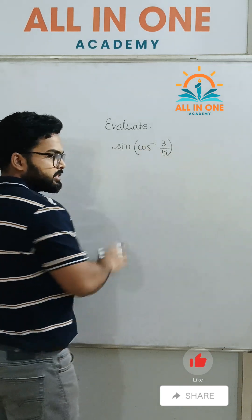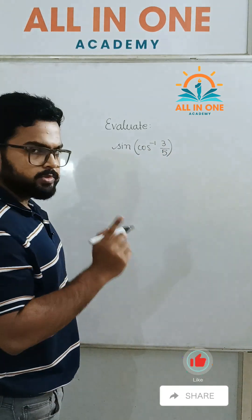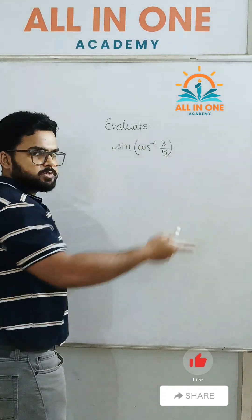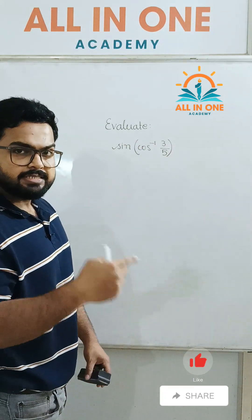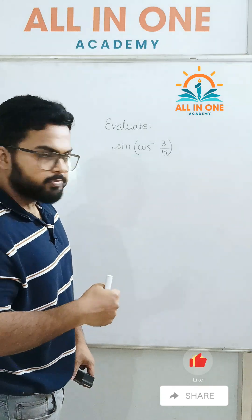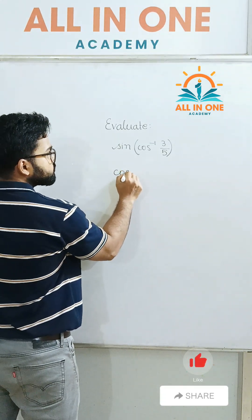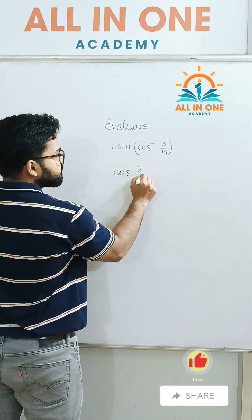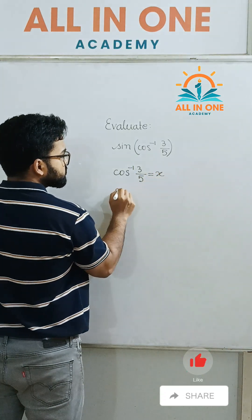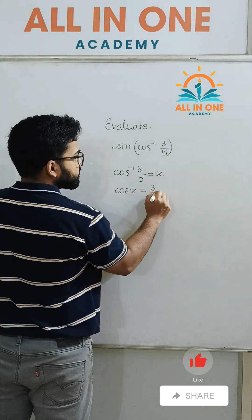In order to evaluate or solve this kind of problem, one important thing we should remember is that we should let cos inverse (3/5) equal x. That is, cos x = 3/5.